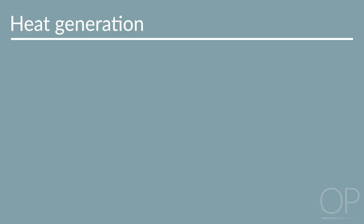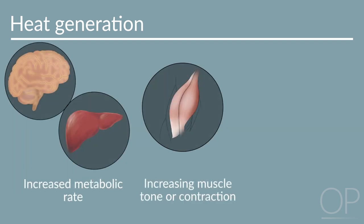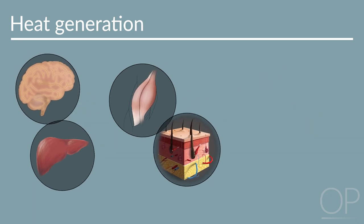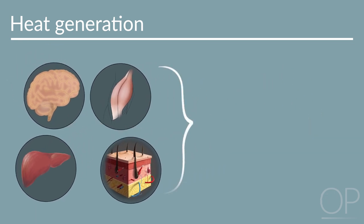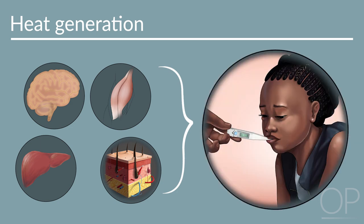With a new, higher set point, the body increases heat generation through processes such as increased metabolic rate, increasing muscle tone or contraction, and decreasing epidermal heat loss by modulating skin perfusion. Combined, these result in a higher body temperature to meet the newly increased hypothalamic set point and result in clinical fever.